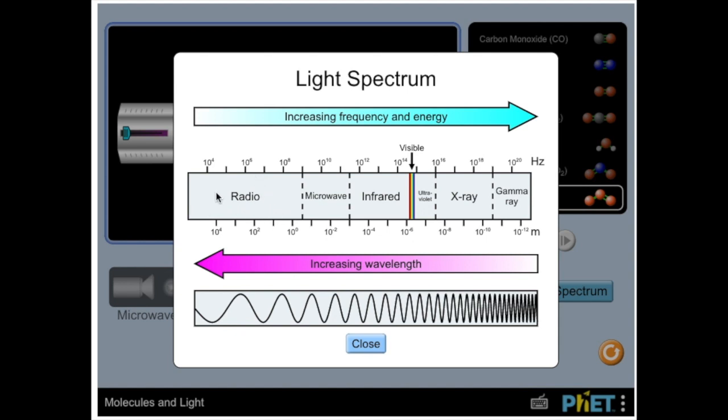Starting with the longest wavelengths at radio, which you can see here, and slowly getting smaller and smaller or shorter and shorter wavelengths all the way up to gamma radiation. Remember, as it gets higher, the frequency increases and so does the energy of the waves.